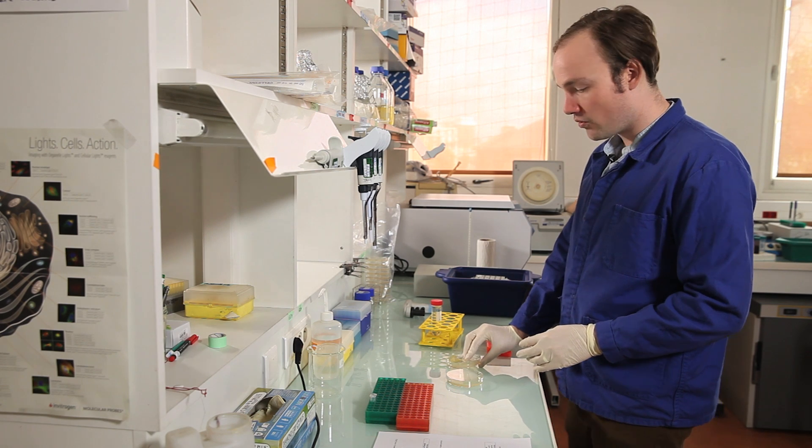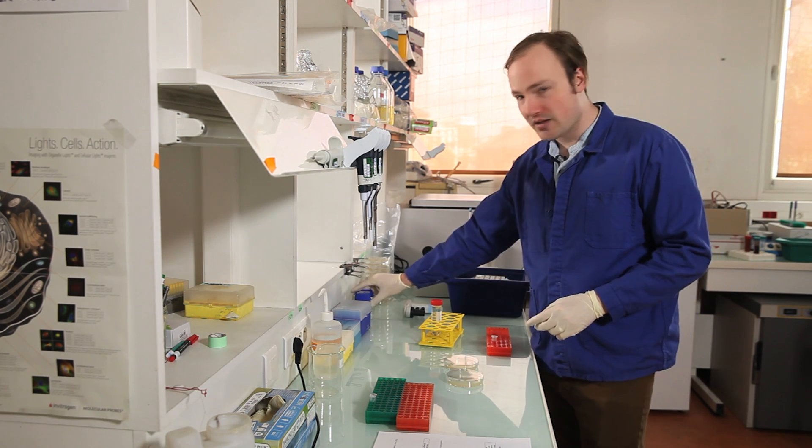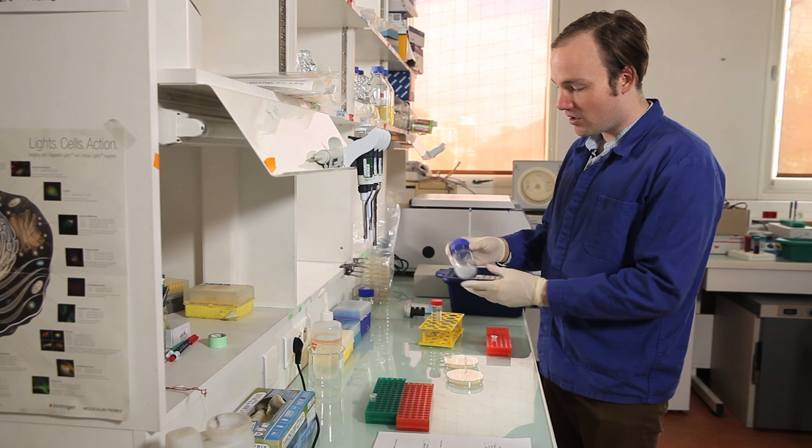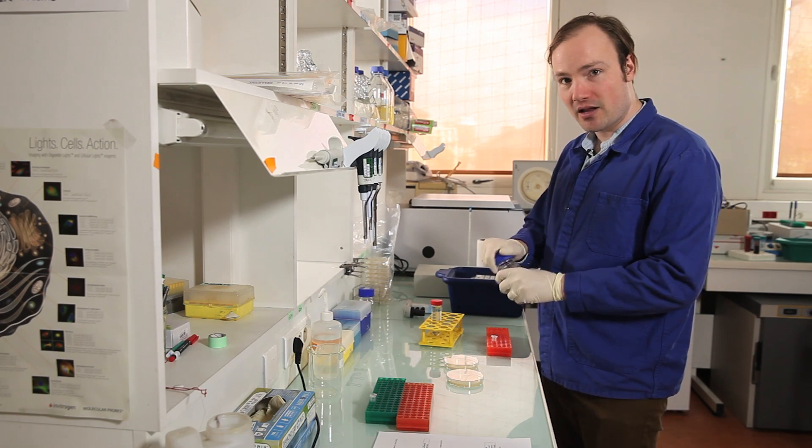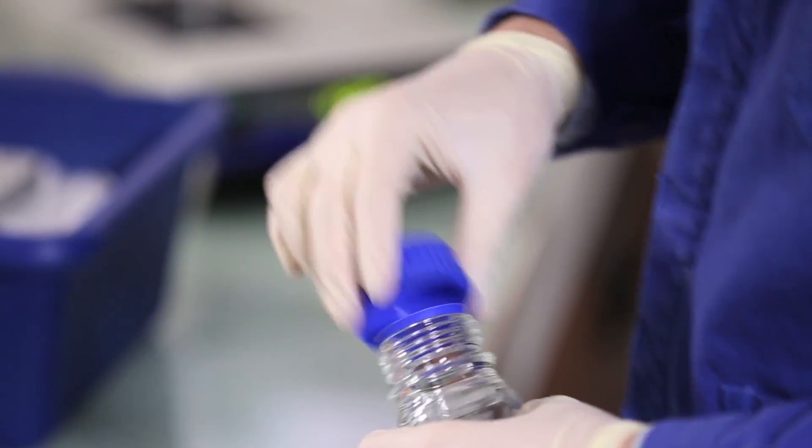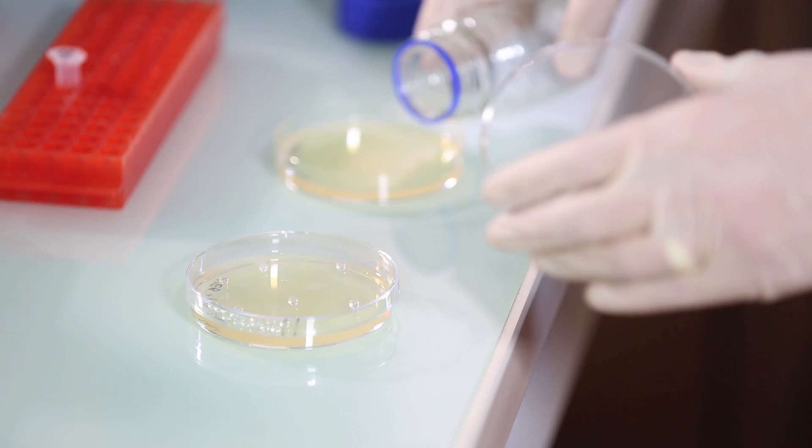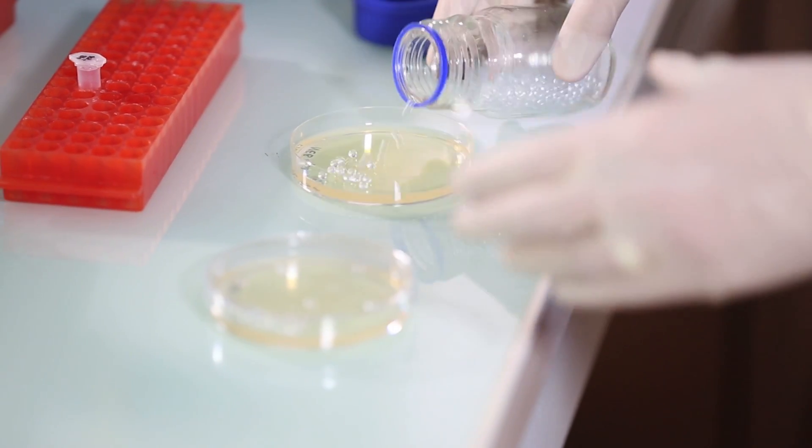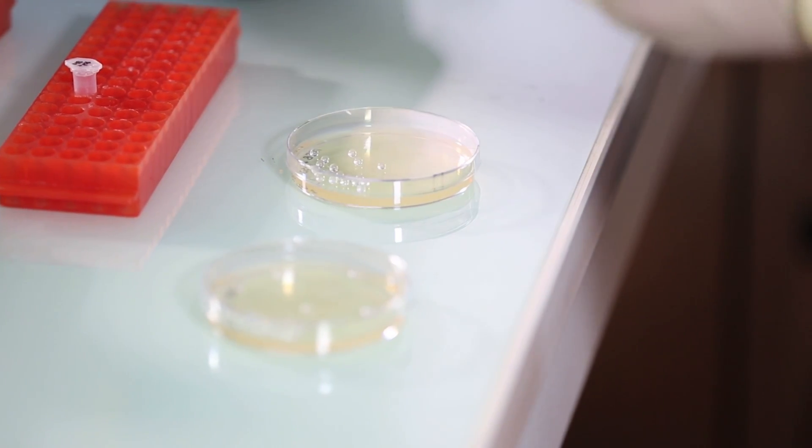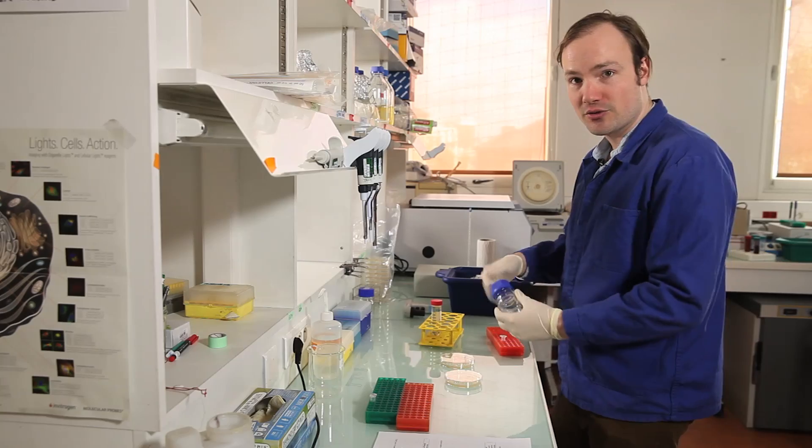Okay. So to plate these cells, I'm going to use these. So these are glass beads that I'll add to the plates. And they have the effect of spreading the media evenly around the plates without absorbing too many bacteria. And so they're going to give us a nice even distribution of bacteria on the surface of the plates.